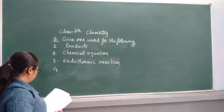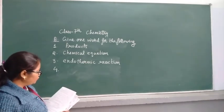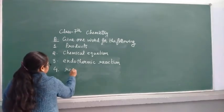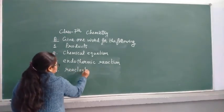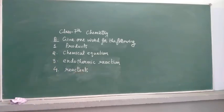Fourth one: Substances written on the left hand side of the arrow in a chemical reaction are reactants. So your first answer is product, second answer is chemical equation, third one is endothermic reaction, and the last one is reactants.